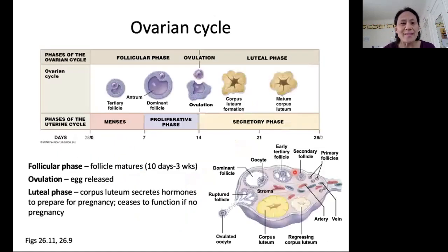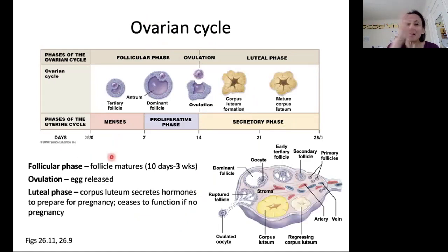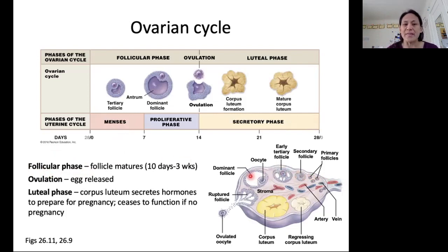Taking a closer look at these cycles, the ovarian cycle consists of three main parts — really two main phases separated by an event. The beginning of the ovarian cycle is the follicular phase. What happens during the follicular phase is that our follicles are going to be maturing, and that lasts in the textbook version about 14 days.